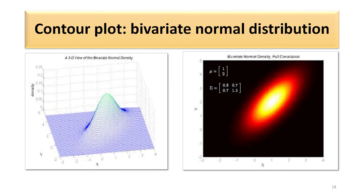Contour plots are very useful in identifying multivariate distributions. Let us look at the contour plot of a bivariate normal distribution. Here we have variables x and y, and in place of z we have the density function of the joint distribution of x and y. The mean vector has components 1 and 2, and sigma is not an identity matrix. From the shape on the base, we can see that this is elliptical, and therefore this distribution belongs to the class of elliptical distributions.